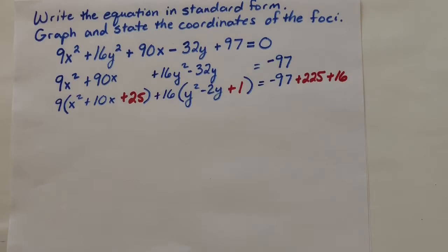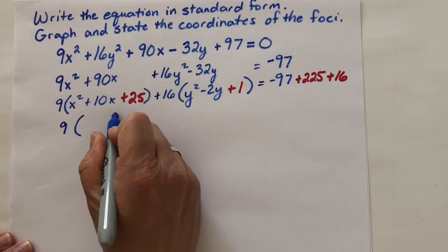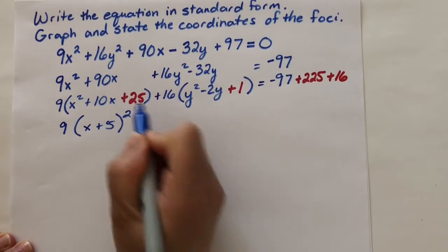So we can write this trinomial as this binomial squared. It is (x+5)². And that was the point. We wanted to write that as a perfect square.